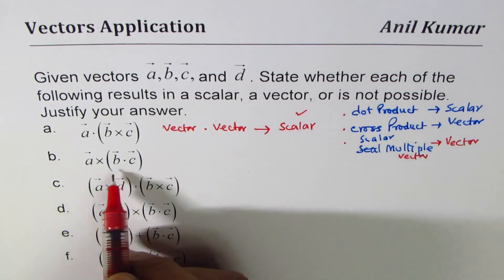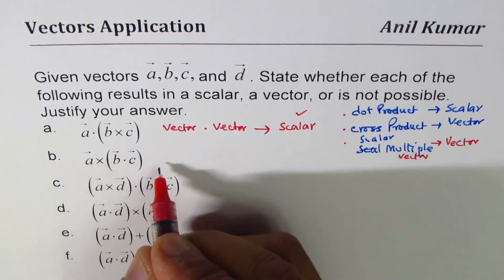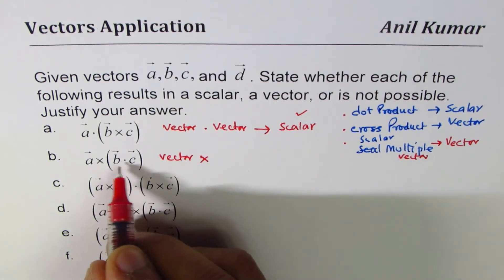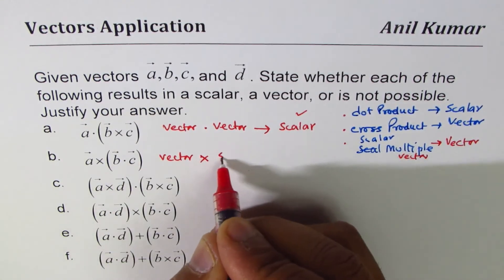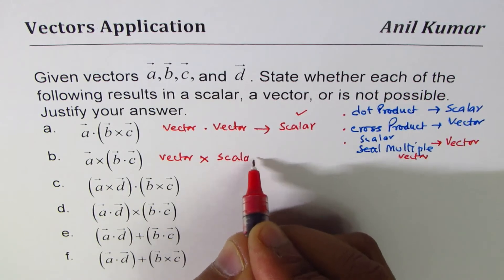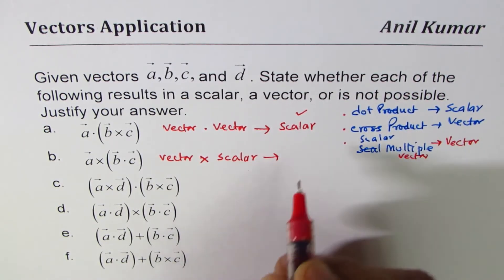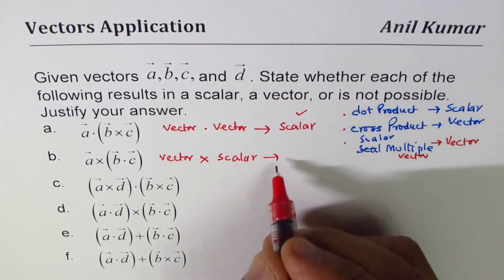That is the first one. Now the second one is a×(b·c is a scalar). Now cross product is always between vectors, right? So this is not possible.